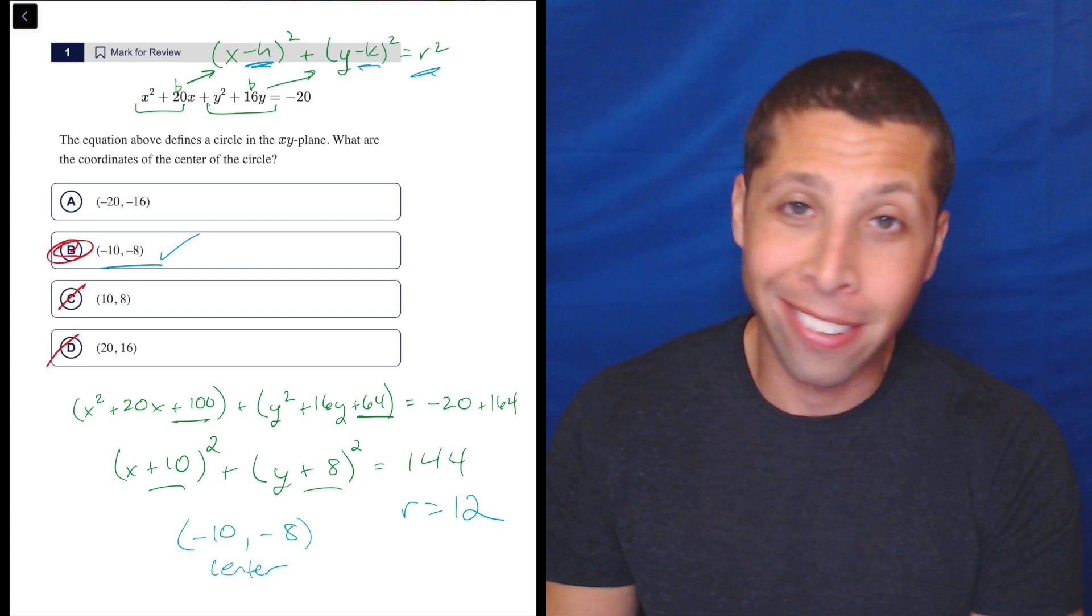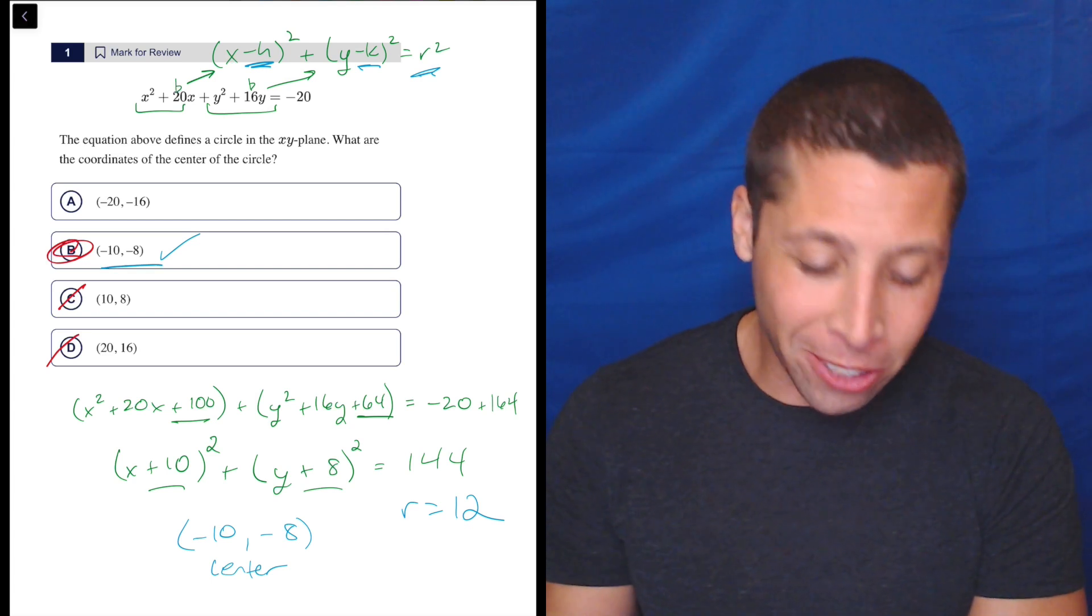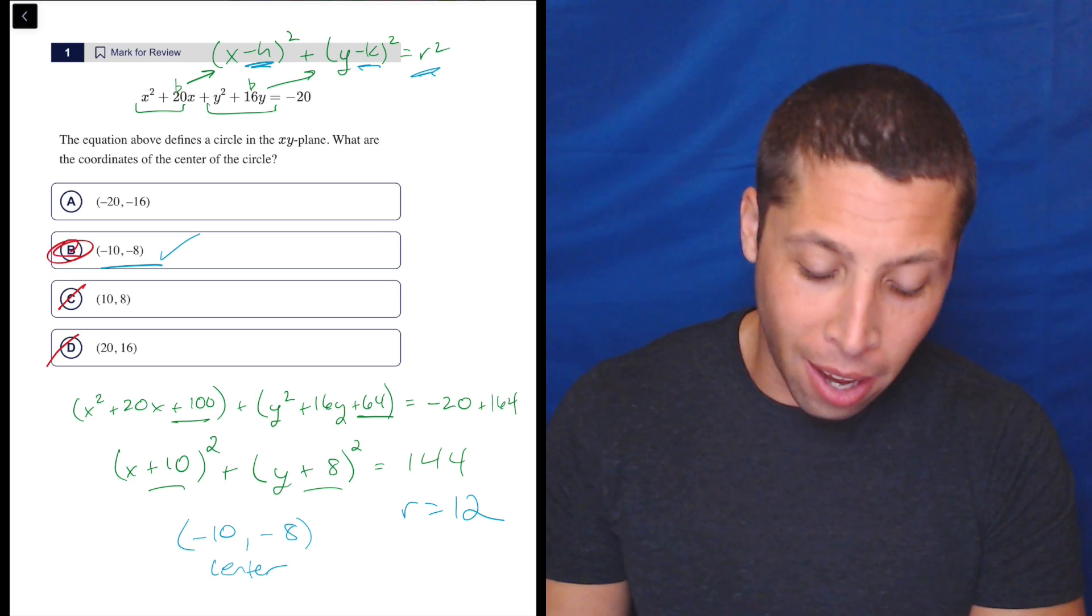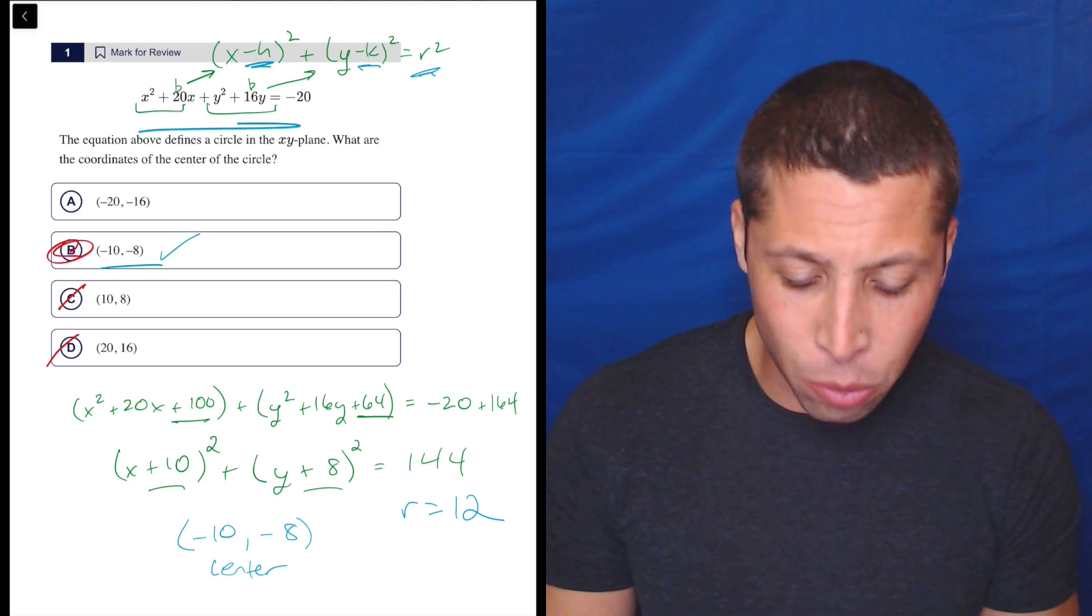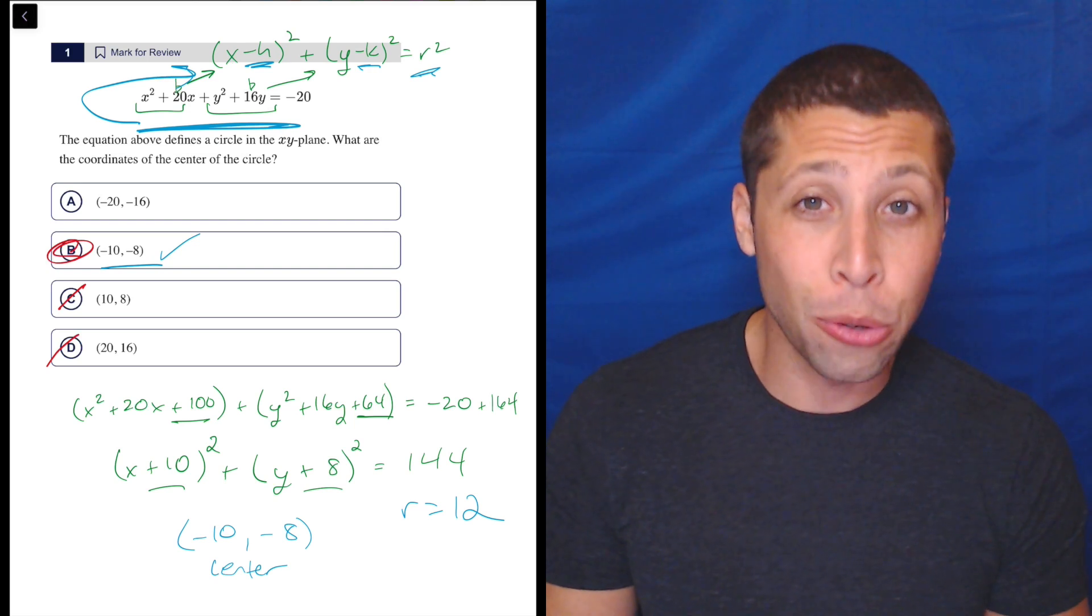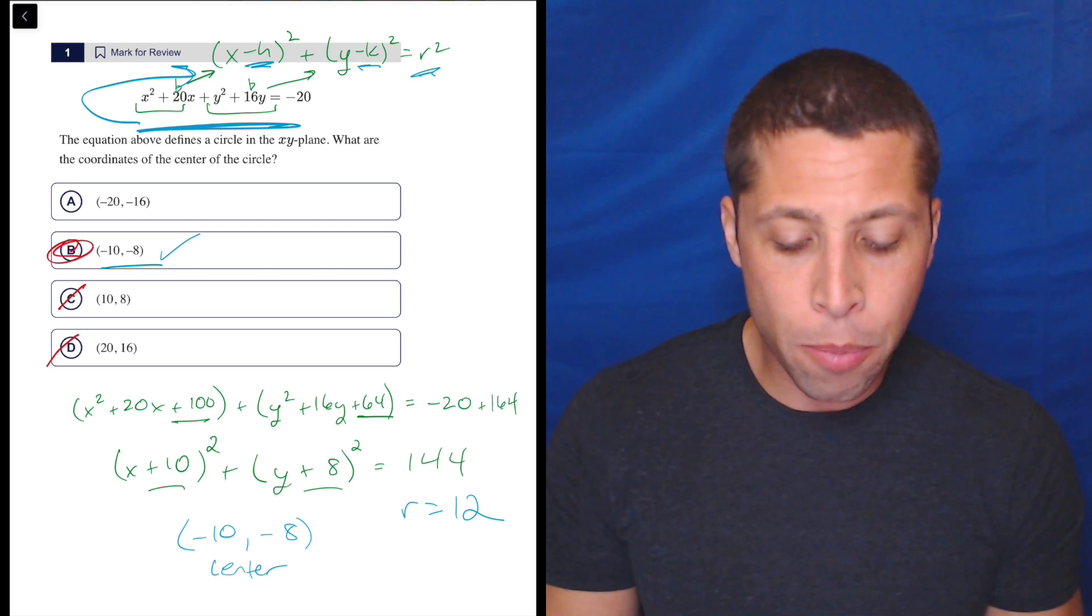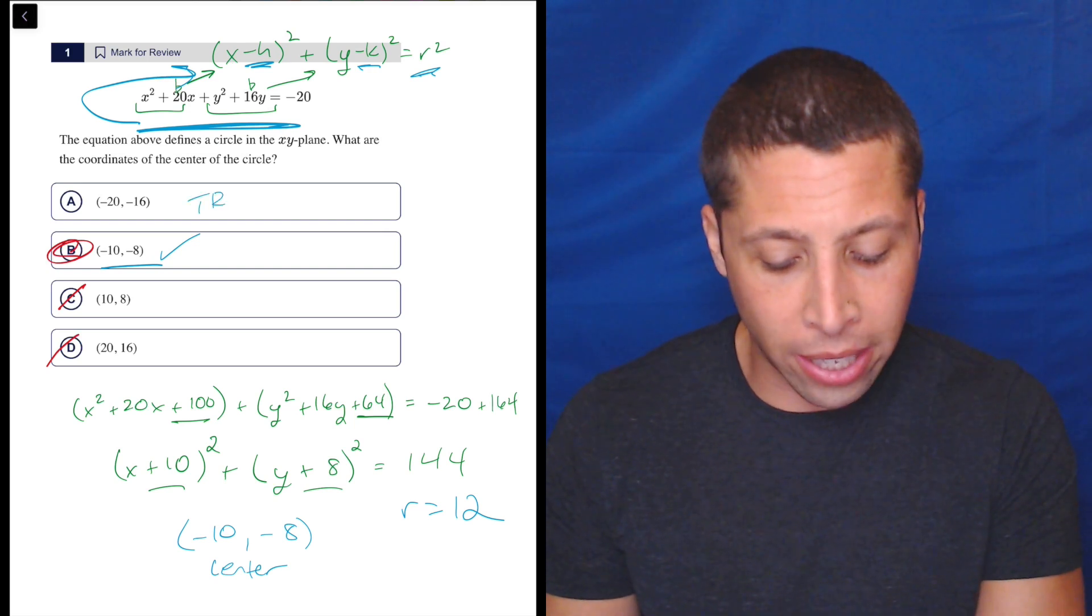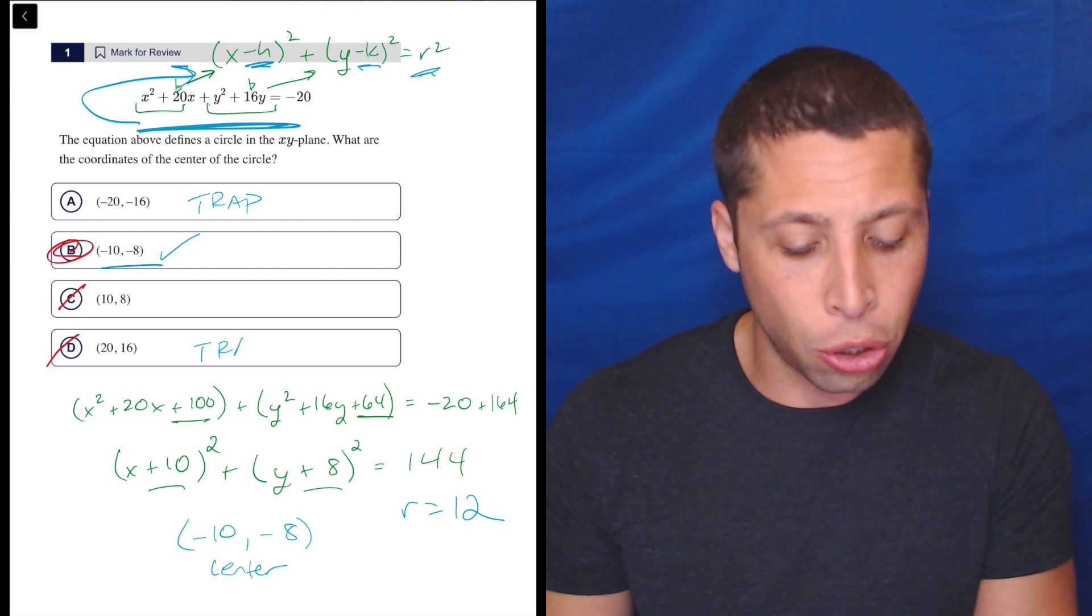But yeah, I mean, Desmos is way easier. The only other thing I'll add is if we, for some reason, couldn't use Desmos, we would also want to see that this is weird, right? That this version is not the same as this version. Even if you didn't remember how to complete the square, I would hope that you would recognize that choices like A and D are too easy, right?